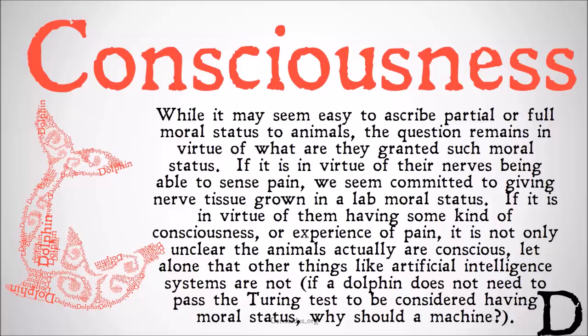And let alone other things like artificial intelligence or machines, which are generally considered not to have moral status, but seem to be able to do things that a lot of animals can't. If a dolphin doesn't need to pass the Turing test to be considered as having moral status, why should a machine? So when we're ascribing consciousness to animals, it seems like we're holding them to a much lower bar than we would hold a machine to. Is it just a bias towards organic matter over inorganic matter?